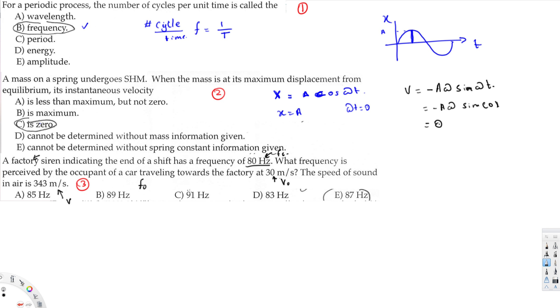The Doppler effect equation is: F observer equals F source multiply by V plus or minus V observer over V plus or minus V source. Here the source is not moving, it's in the same place because it's just a factory, right? So it's not moving. We can get rid of this V_s because it's not going to be present.